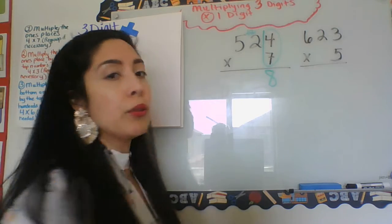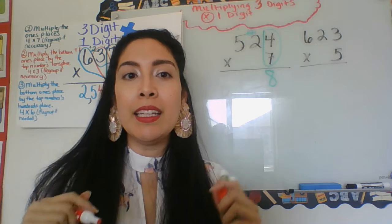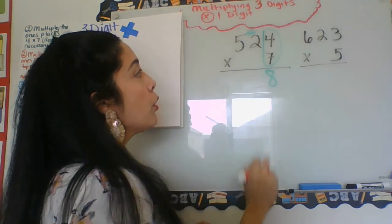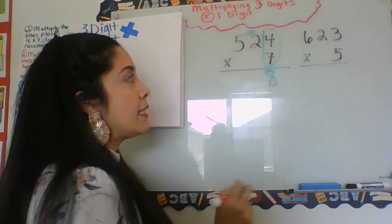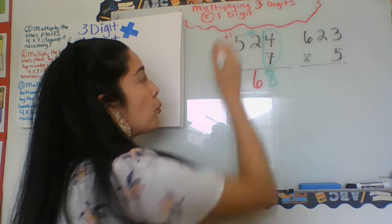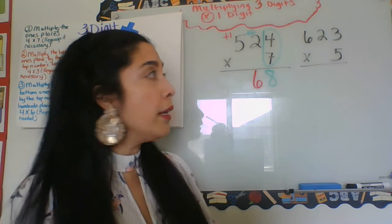Seven times two. Seven times two is 14, and if I regroup the two, that means add two more: 14, 15, 16, right? Drop the six, carry over and regroup a one, so we drop the six, carry over, regroup the one.